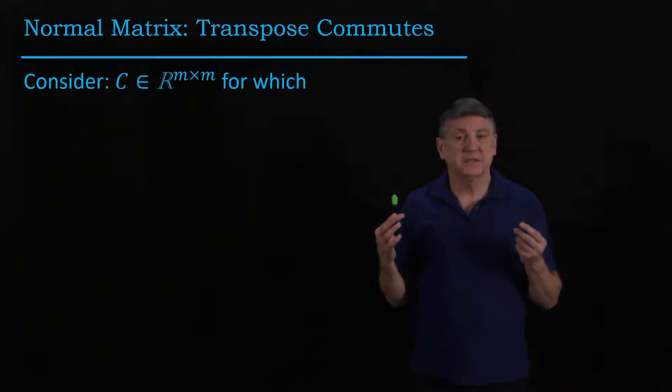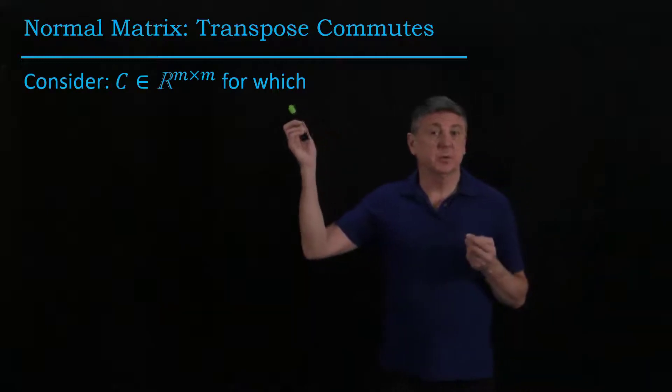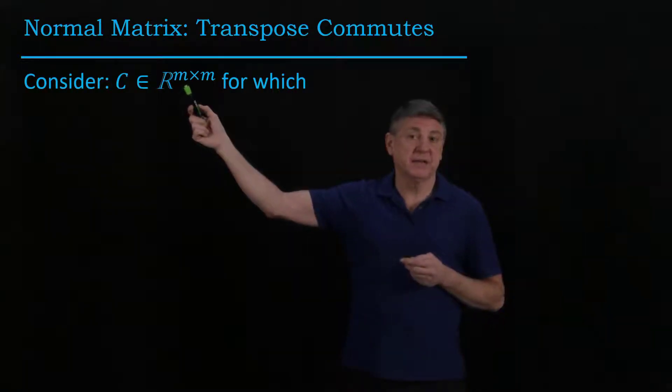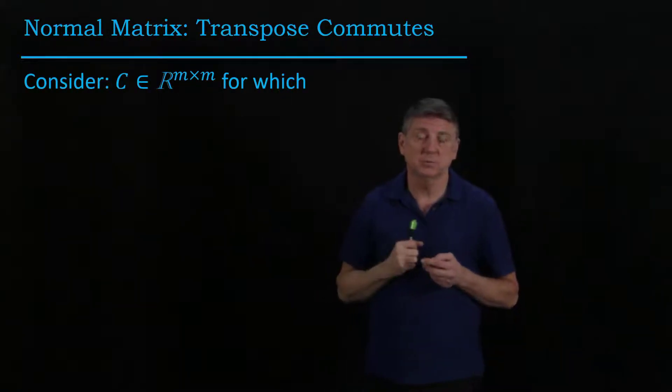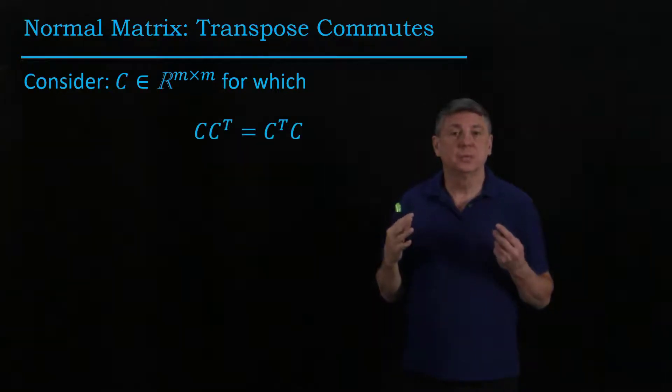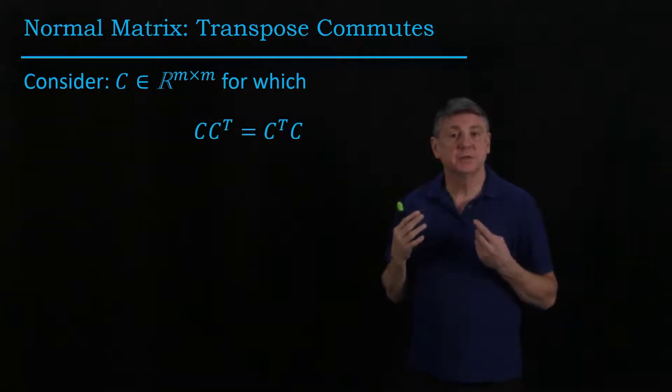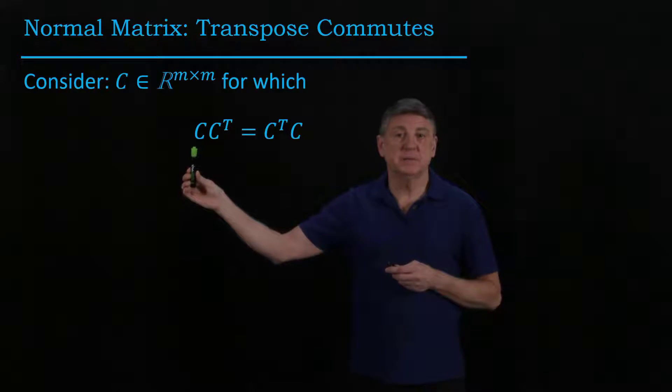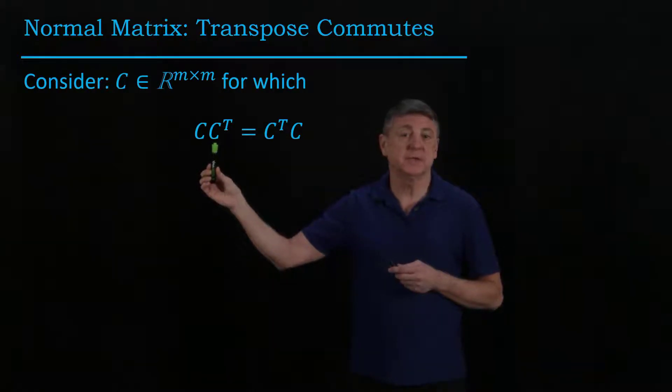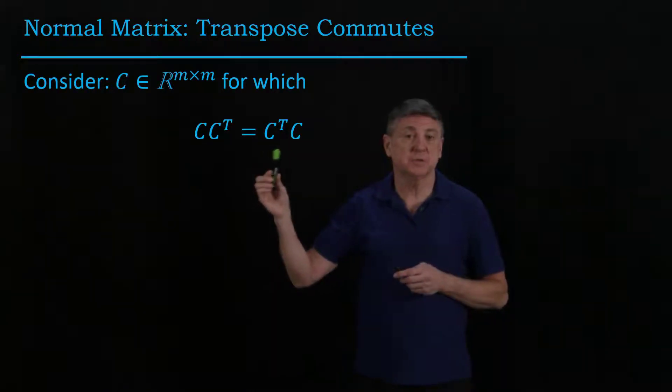A normal matrix is a square matrix, so let's suppose that it has m rows and m columns. A normal matrix is one that commutes with its transpose, so that means that the matrix times its transpose is the same as the transpose times the matrix.